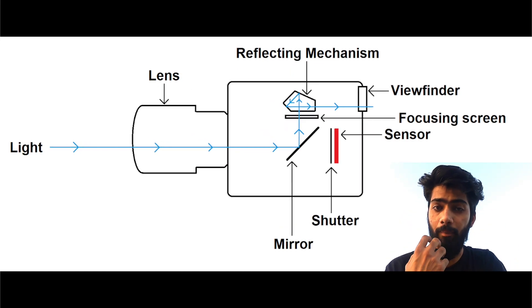In the viewfinder, the light bounces so you can see and understand the image. The mirror's role is to bounce light back up so that we can see through the viewfinder. The difference between mirrorless and mirror cameras will be covered in the next video.